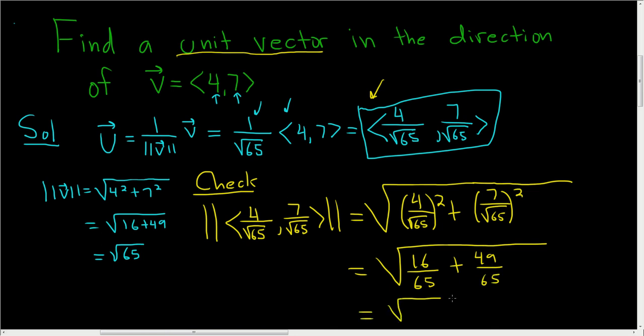And this ends up being 16 plus 49 is 65, so you get 65 over 65. So you get the square root of 1, which is 1. There it is, it checks. So that is the correct answer. I hope this helps.